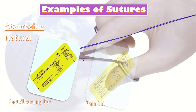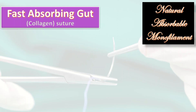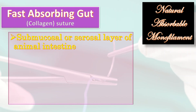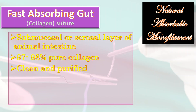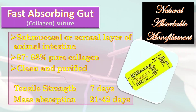Fast absorbing gut consists of collagen sutures that are natural absorbable monofilaments derived from the submucosal or serosal layer of animal intestine. The material is 97 to 98 percent pure collagen, clean and purified. Tensile strength is maintained for 7 days, and mass absorption occurs within 21 to 42 days.